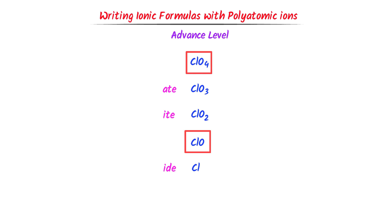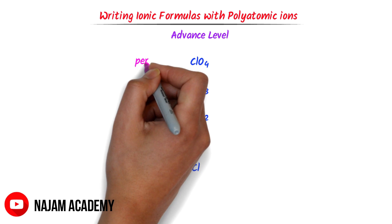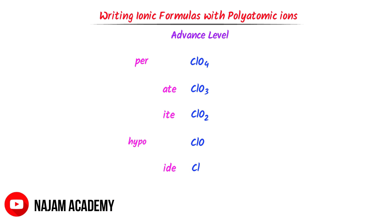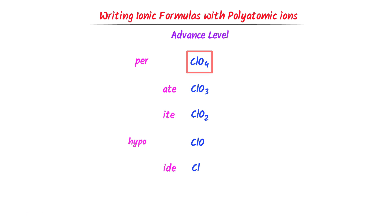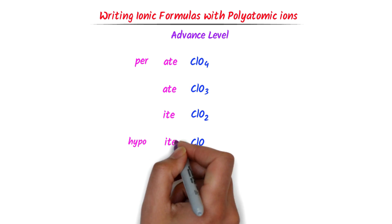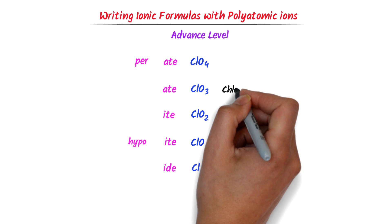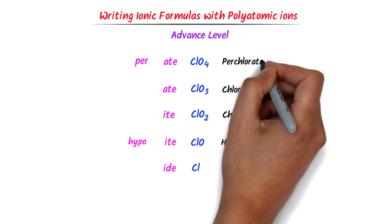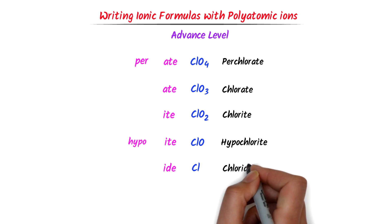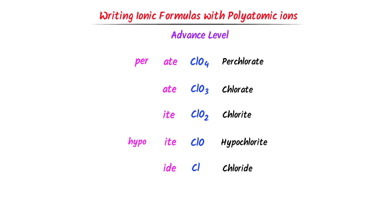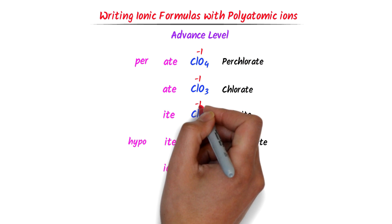For the two remaining ions, I write 'per' for the one above ATE and 'hypo' for the one below ITE. I name them all starting from the second row: chlorite (ClO₂⁻), chlorate (ClO₃⁻), perchlorate (ClO₄⁻), hypochlorite (ClO⁻), and chloride (Cl⁻). Remember that all these polyatomic ions carry a negative 1 charge.